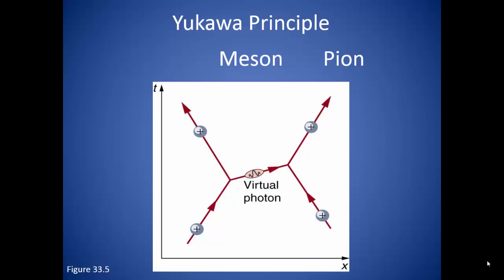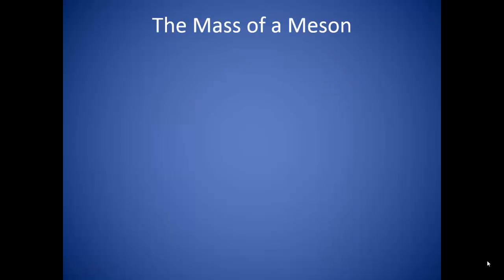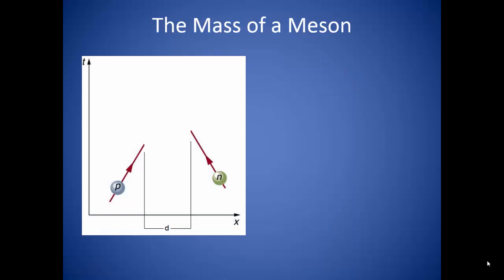We can use the Feynman diagram and the Heisenberg uncertainty principle to determine the mass of this meson. When the proton and neutron approach each other, they get within a certain distance d. d is the range of the strong nuclear force and is known as 1 Fermi, or 1 times 10 to the negative 15th meters.